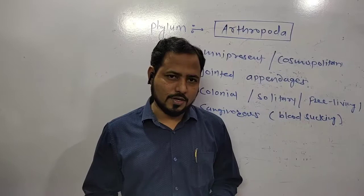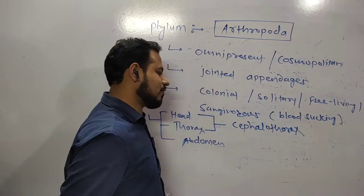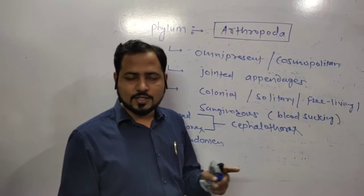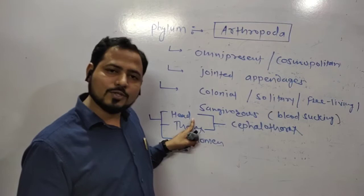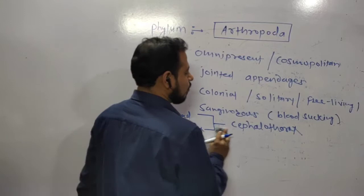Head, thorax and abdomen. In some animals these can be in combination form which you can say cephalothorax. Cephalothorax means union of head and thorax in some animals like prawn, Palaemon. So in two parts you will say cephalothorax and abdomen. Got it?